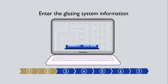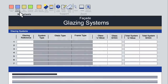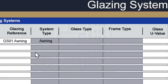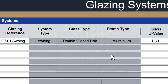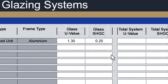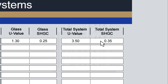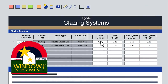Step 2: Enter the glazing system information. Click on the glazing system information square on the ribbon. Enter data creating a unique reference for each glazing system, and select system, glass and frame types from the pull-down menus. When you select a glass type, the calculator will automatically fill in the glass U-value and solar heat gain coefficient from a built-in user library. Finally, enter the total system U and SHGC values. These values will vary depending on the window size and framing features, including sub-framing. This information may be available from the window supplier, from the WERS database, or you may calculate it yourself.